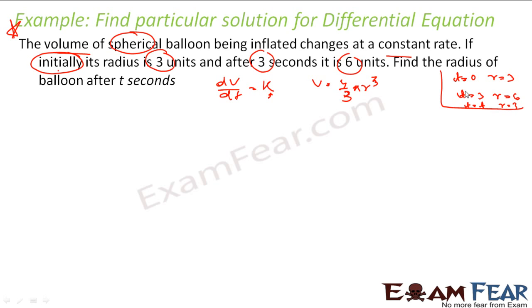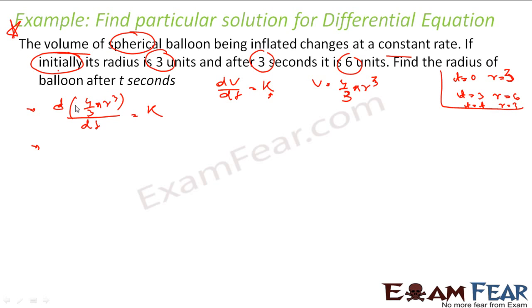We are told that at t = 0, r = 3 and at t = 3, r = 6. So dV/dt = k. Substituting V = 4/3 π r³, we differentiate to get 4/3 π · 3r² · dR/dt = k, which simplifies to 4π r² dR/dt = k.